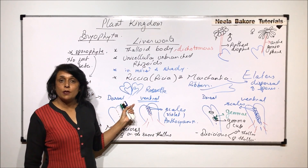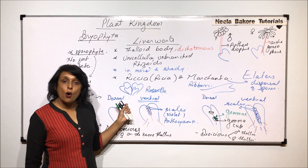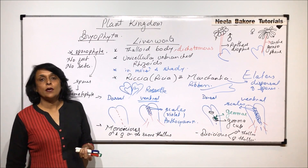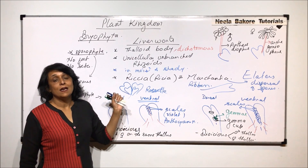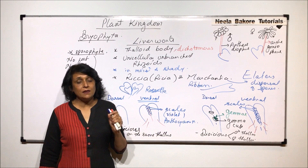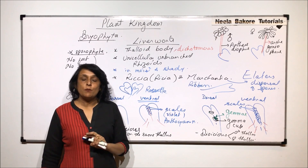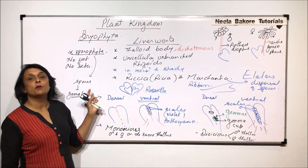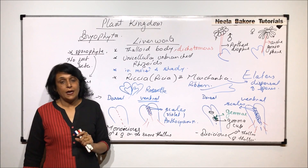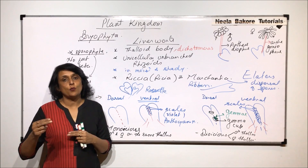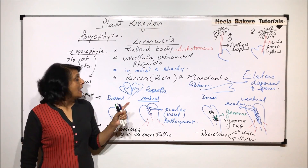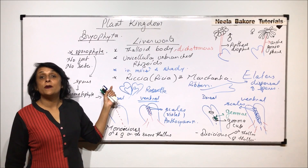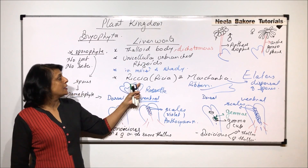In Riccia, asexual reproduction is normally by fragmentation or tubers, whereas in Marchantia it is through gemmae. Sexual reproduction involves formation of gametes — the male gamete is motile and swims to the female gamete (oogamous fertilization). Zygote gives rise to the sporophyte, sporophyte produces spores, and spores give rise to the gametophyte — there is alternation of generations. The predominant stage is the thalloid gametophyte, which is why these are called primitive bryophytes.